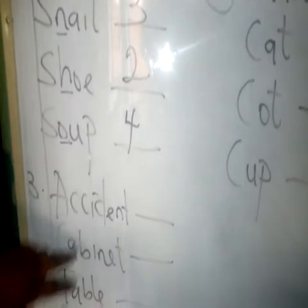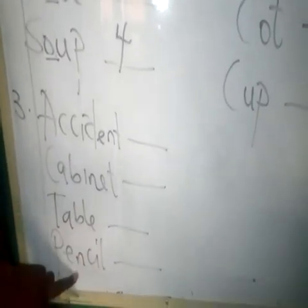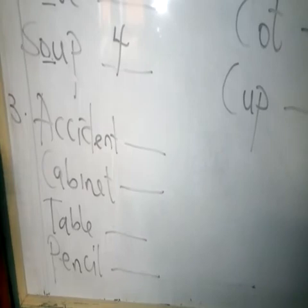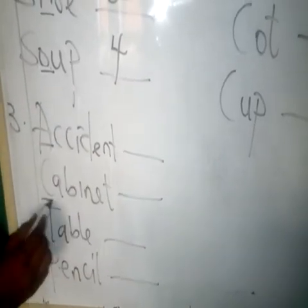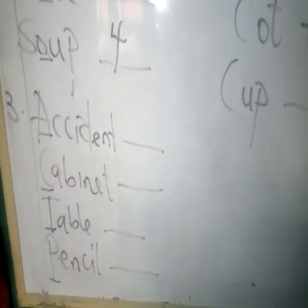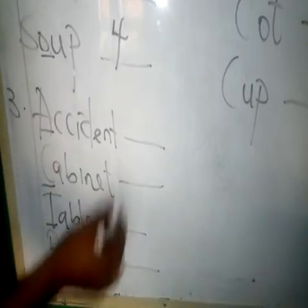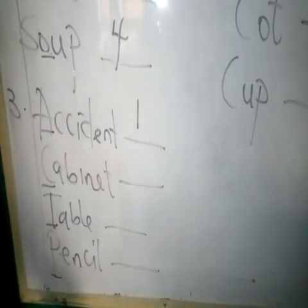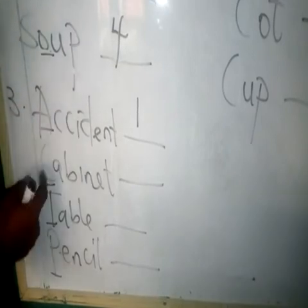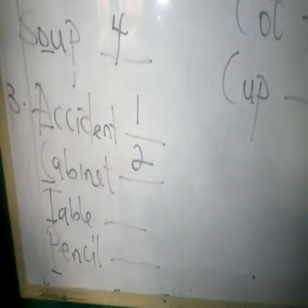Here we have Accident. Here we have Cabinet. Here we have Table. And here we have Pencil. Let's take the first alphabet: A, C, T, and P. Which one will come first? You know A will come first, put 1. Here we have C, T, and P remaining. Which one will come second? You know C will come second, put 2.